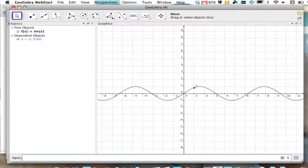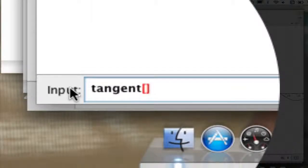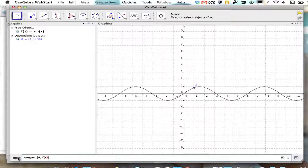Next thing we're going to do is add a tangent line. So we're going to type in tangent, and then with a square bracket, we're going to type the point A, followed by a comma, and the function that we want it to be tangent to, in this case f of x. I'm going to press enter here.